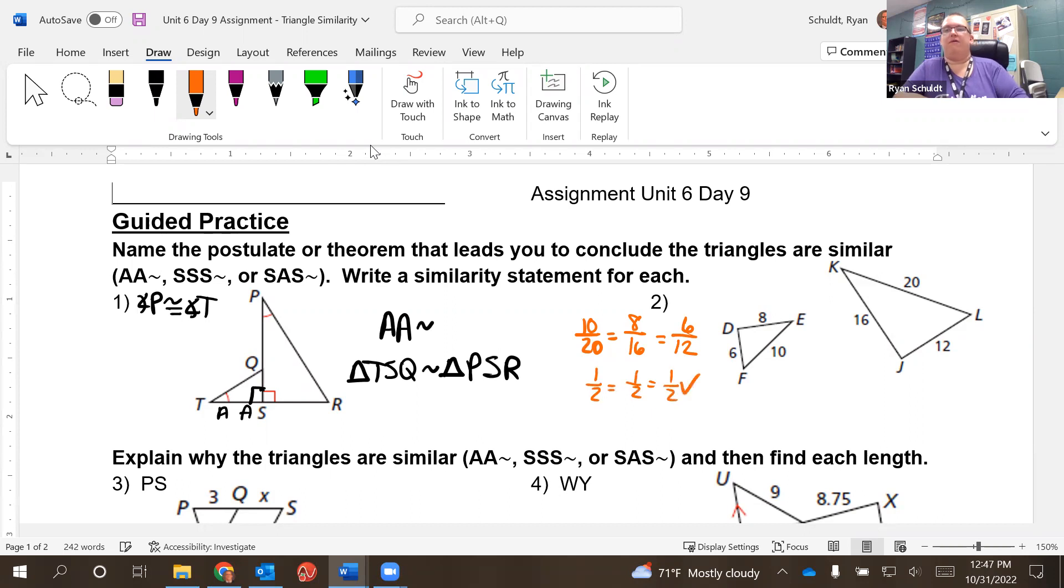They're all the same. So these are similar by side, side, side similarity. So we can say triangle DEF is similar. So D, E, F, similar to triangle J, K, L.